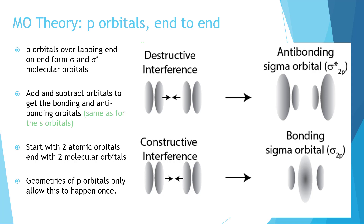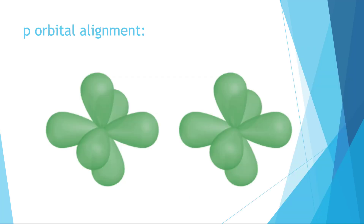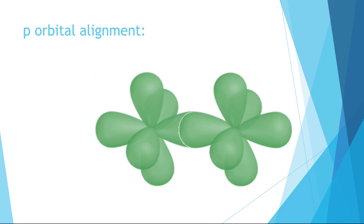Since there are three p orbitals in each atom, there are different ways they must overlap to form bonds. They can only overlap end-on-end once, because all p orbitals are spaced 90 degrees from each other. The other two orbitals must overlap in a side-on-side manner. These have a different type of symmetry and are therefore named differently. Just as before, combining two orbitals yields two new molecular orbitals — one bonding and one anti-bonding.